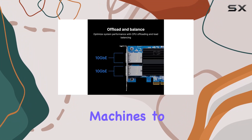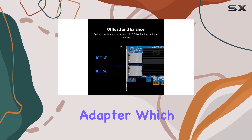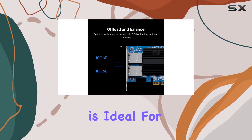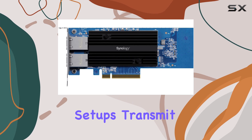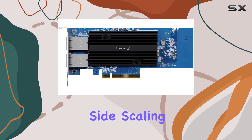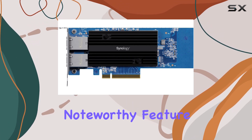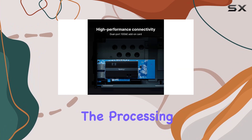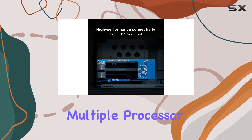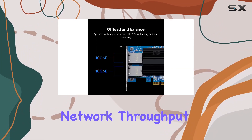allowing virtual machines to directly access the network adapter, which is ideal for virtualization setups. Transmit Side Scaling (TSS) is another noteworthy feature, distributing the processing load across multiple processor cores to maximize network throughput.